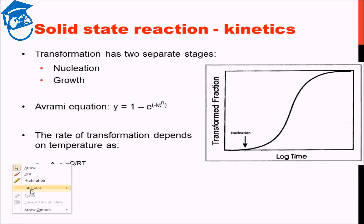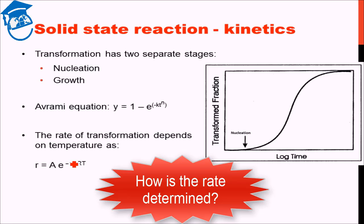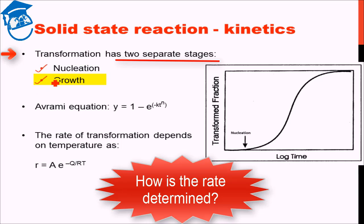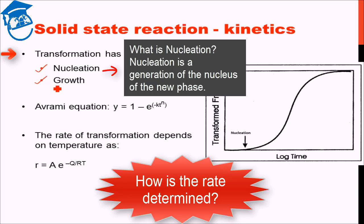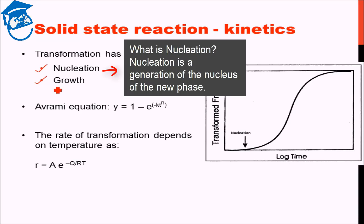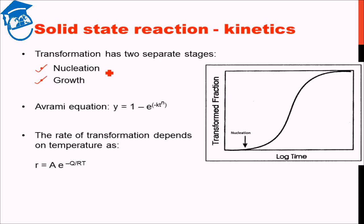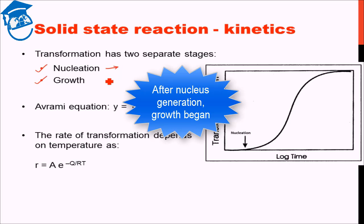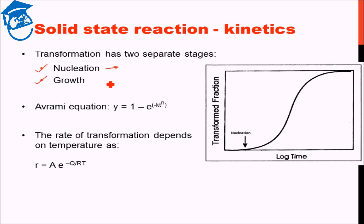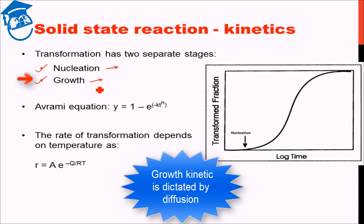Now, how is the rate determined, and what factors affect the rate of reaction? Phase transformation consists of two different stages: the first stage is nucleation and the second is growth. Nucleation is basically the generation of a nucleus of the new phase. Only once the new nucleus has formed can growth begin, so nucleation can take some amount of time on its own. Once nucleation has taken place and you have a nucleus, that nucleus starts to grow, and the growth also has particular kinetics dictated by diffusion.